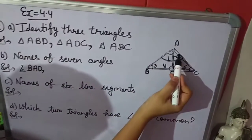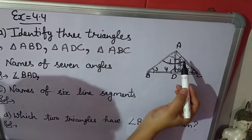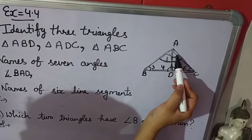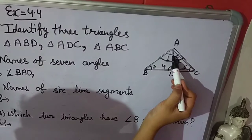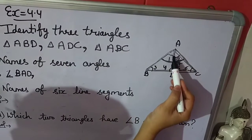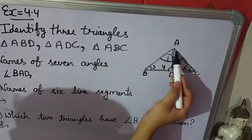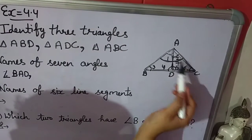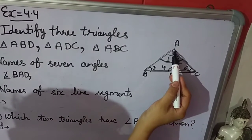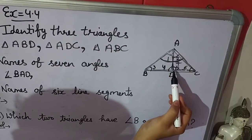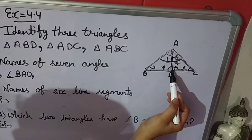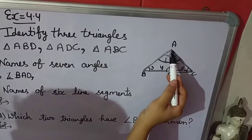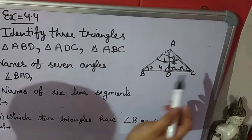Now we will take angle 2. We will see what are the arms of angle 2. That is AD and AC. And A is the vertex. So angle 2 is angle DAC.